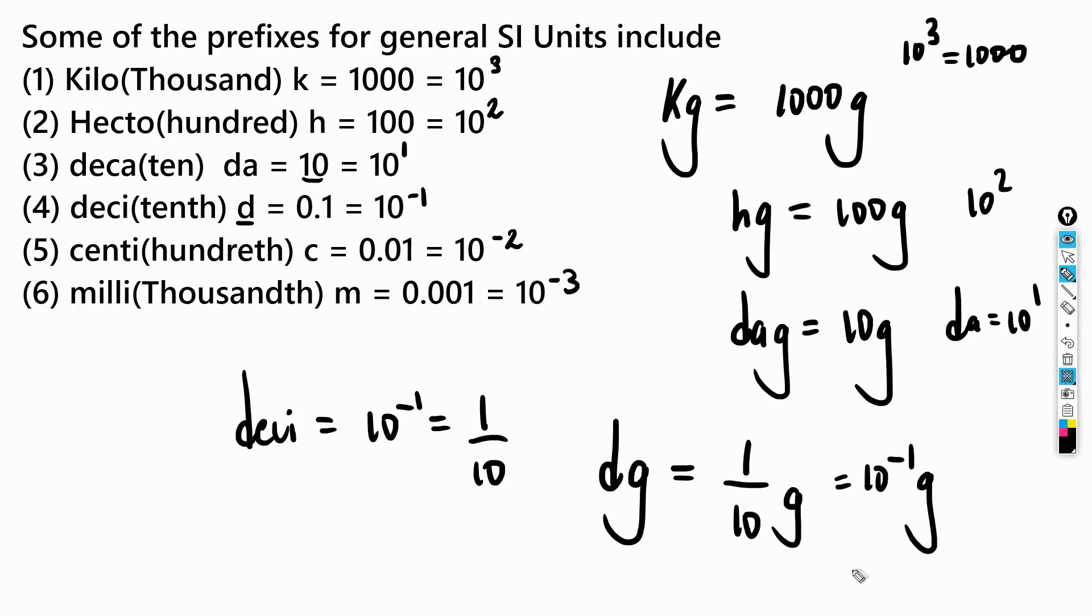We're looking at the prefix centi (c), which represents 0.01. We use centi very often to represent centimeter: 0.01 × 1 meter, which is the same as 0.01 meters. We use this one really often, so get used to c because we use centimeters a lot.